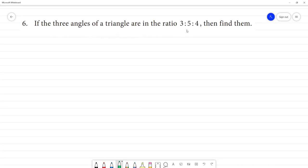If the 3 angles of a triangle are in the ratio 3 is to 5 is to 4, find them. So, the 3 angles are in the ratio, which means the angles are multiples of these numbers.